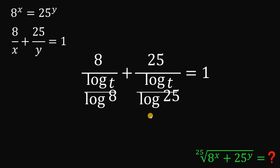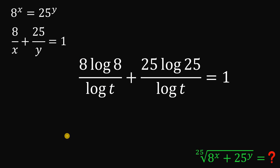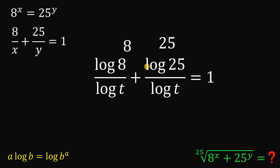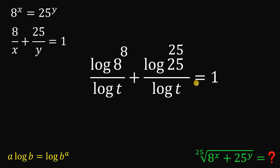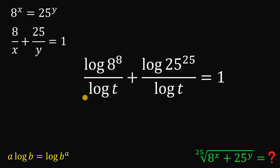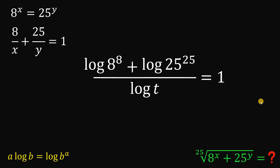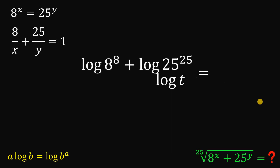Now take the reciprocal of each denominator. Using laws of logarithm — when we have a times logarithm of b, we can rewrite this as logarithm of b raised to the power of a — so we pull the 8 and 25 into the exponents of their respective logarithms. Since these are like fractions with the same base, we can combine them. Then multiply both sides by logarithm of t.